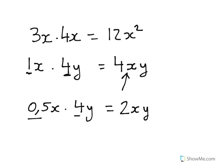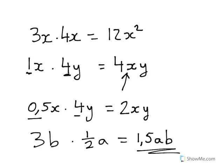So if we had 3b multiplied by 1 half a, the answer would be 3 times 1 half is 1 and 1 half. a times b, or b times a is ba, but we would always write that a first. So that would be ab.